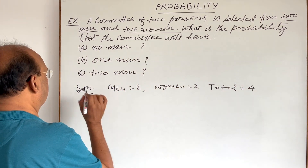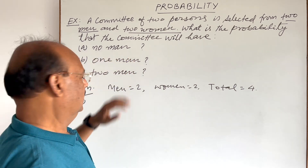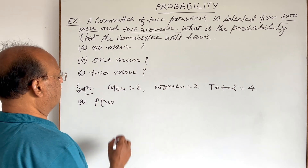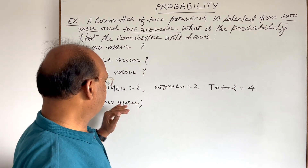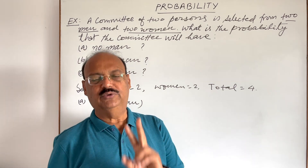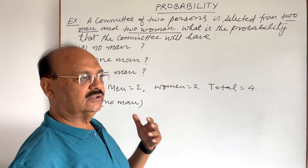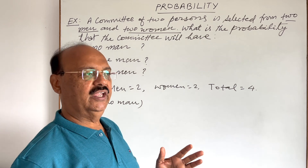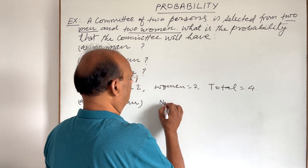Let us see the solution of part A. We have to select no man, meaning we have to find out the probability when the committee consists of no man. This means we have to select two women, and the total number of women is 2, so both will be selected.